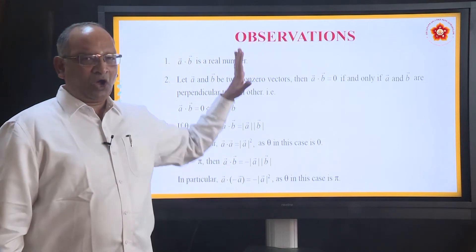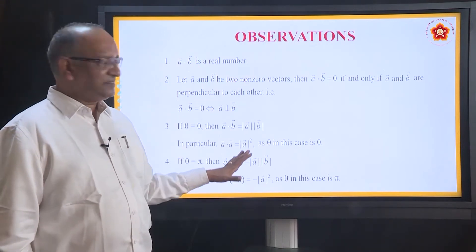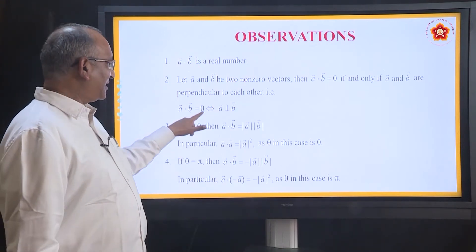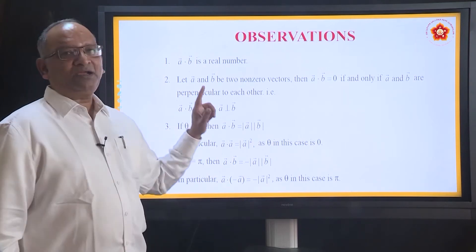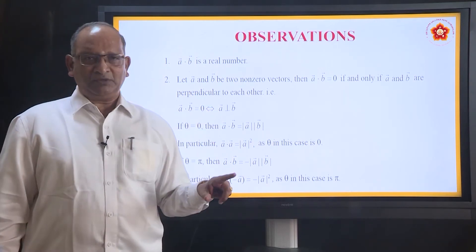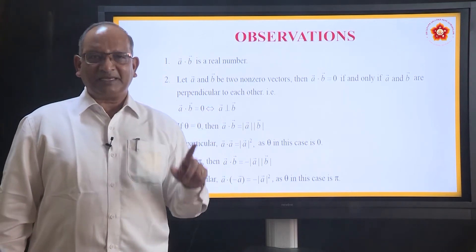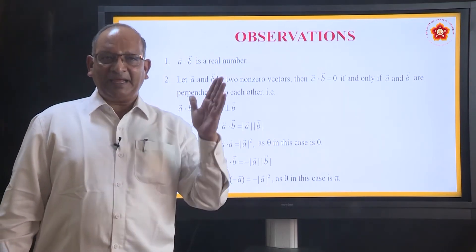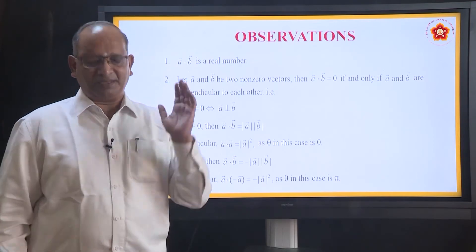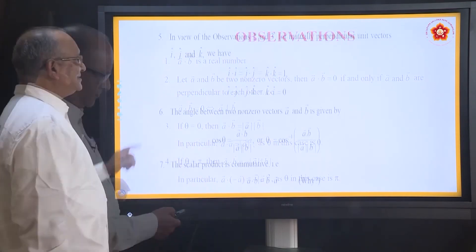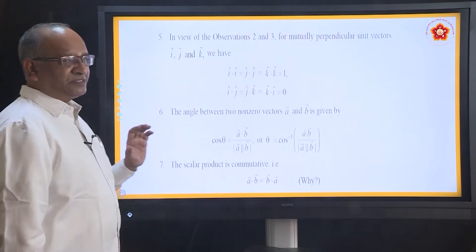The most important among all of them is this particular one: if A dot B equals zero, it basically means that A is perpendicular to B. Now suppose the vectors are expressed in component form.